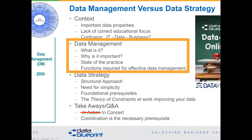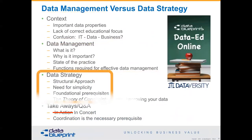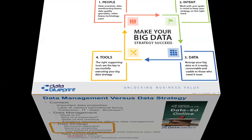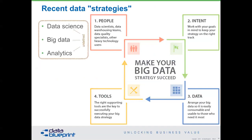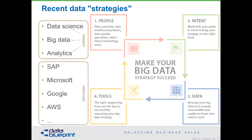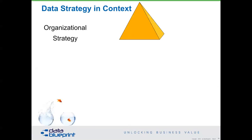Let's move on to data strategy. Data strategy is about understanding where this goes, and yet the number one, two, and three strategies people tell me they're using are data science, big data, and analytics. Data science is becoming problematic because it's defined at too long a level of abstraction. Big data is producing the same 70% failure rate as general IT project work. Analytics — nobody really knows what it means, so it's hard to put out as a strategy. People do not understand data strategy at this point.